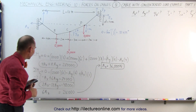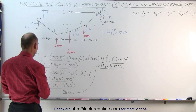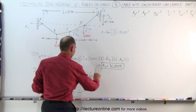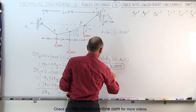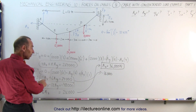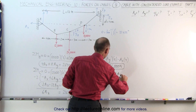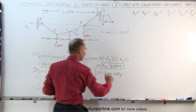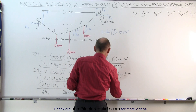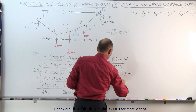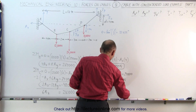Now for A sub Y, we plug A sub X back into the second equation: minus 36,000 plus 6 A sub Y equals 24,000. Moving terms over gives 6 A sub Y equals 60,000. Therefore, A sub Y equals 10,000 newtons.